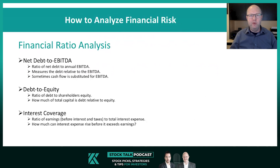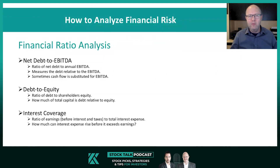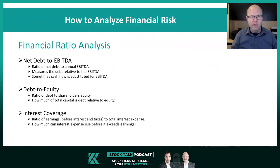So this is the ratio of net debt to EBITDA — essentially measuring the debt relative to the operating performance or operating earnings of the company. Sometimes because EBITDA can be a problematic figure itself, cash flow is substituted and it'll be a net debt to cash flow ratio. But you're essentially figuring out how many multiples of the cash flow or EBITDA the net debt represents, and that gives you an assessment of how indebted the company is relative to its operating earnings or cash flow.